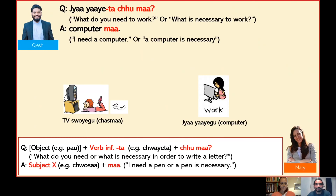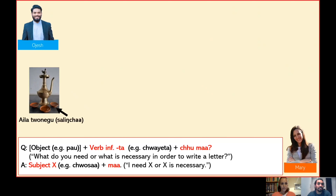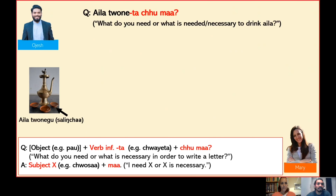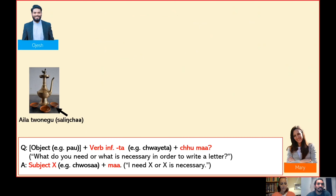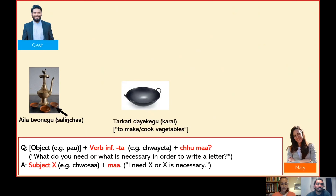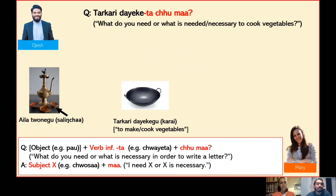Okay, well done Mary. Shall we practice a little bit more? I'll give you some new vocabulary as well. Sure. Here's the first picture: ela tonegu and salincha. Ela toneta chuma. Salincha ma. The next one is tarkari dekegu and karai. Tarkari means vegetables and dekegu literally means 'to make', but in this case we can translate it as 'to cook'. In Nepal Vasa there are different ways of saying 'to cook' according to the type of food. Karai is a special pot used to cook curry. Tarkari deketa chuma. Karai ma.